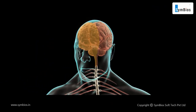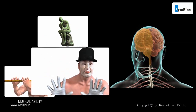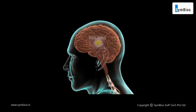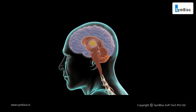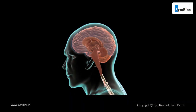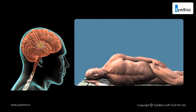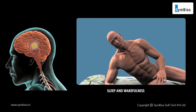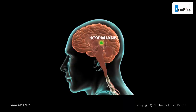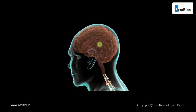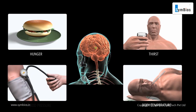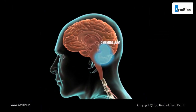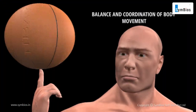The right hemisphere is associated with imagination, musical ability, and artistic expression. The thalamus acts as a relay between a variety of subcortical areas and the cerebral cortex, and also plays an important role in regulating states of sleep and wakefulness. The hypothalamus is the important control centre for hunger, thirst, body temperature, blood pressure, and so on.